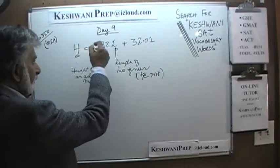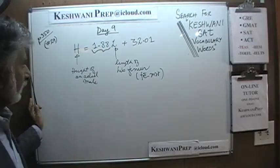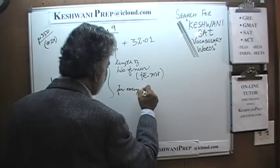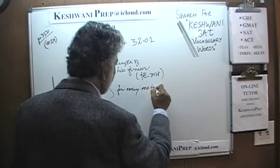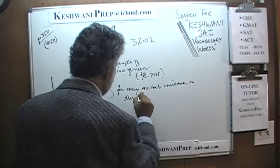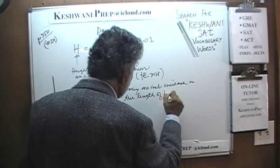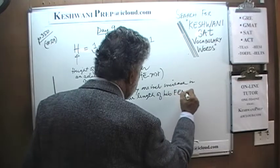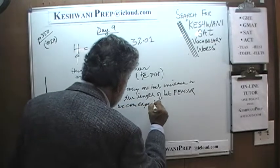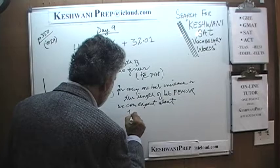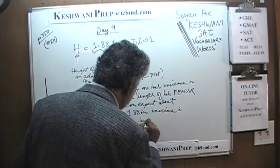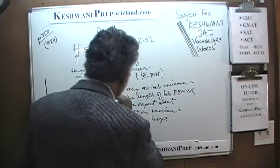The question is, in the context of this equation, what does the number 1.88 signify? It is very straightforward. What 1.88L tells us is that for every 1 inch increase in the length of his femur — this is measured in inches — we can expect approximately 1.88 inches increase in his height. And that is what that coefficient tells us.